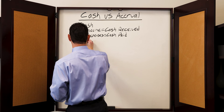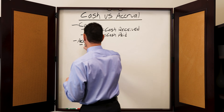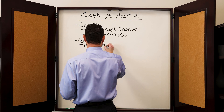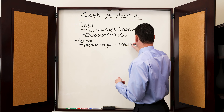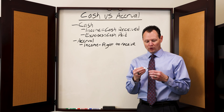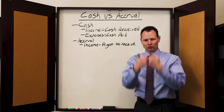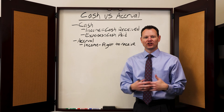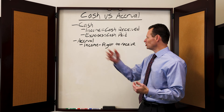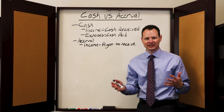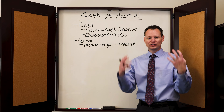What about accrual? For the accrual method, income is recognized when you have a right to receive a payment. So when you are working in your business and you bill somebody — you send them an invoice — you now have a right to receive that payment because you've done the work and everything required to be paid. You just haven't been paid yet.